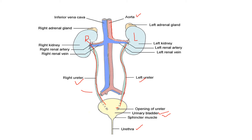When we talk about the arteries and veins of the kidney, the artery coming into the left kidney is called the left renal artery, and the left renal vein takes blood out from the left kidney. Similarly, there is the right renal artery. We can also see the left adrenal gland and the right adrenal gland. Labeling is very important for exam questions.